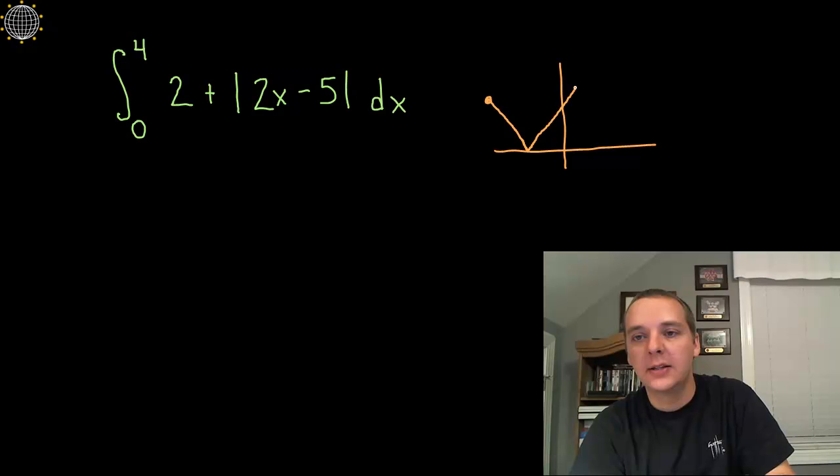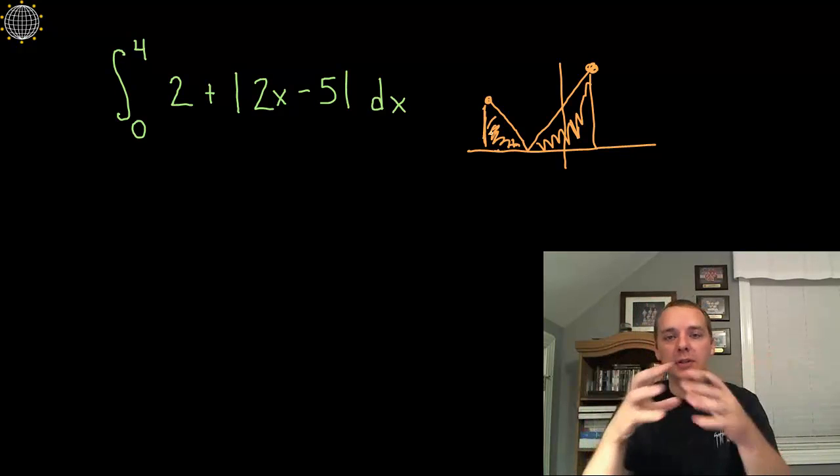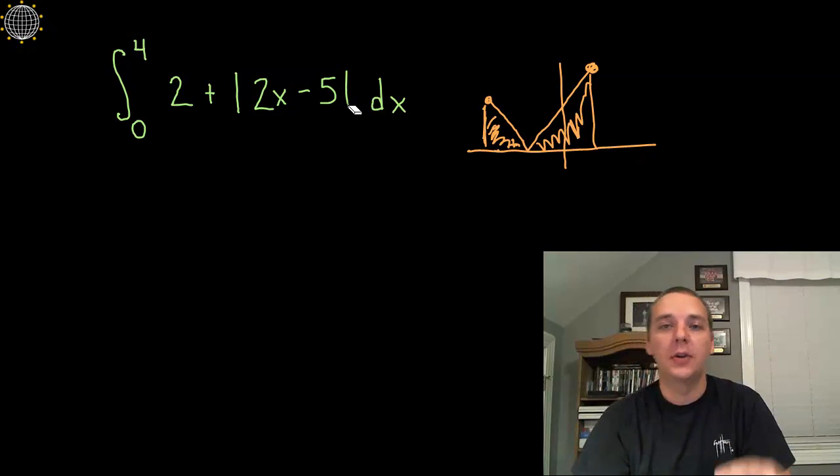So if your region looks something like this, just as an example, you would integrate from the first x value up to the vertex, and then from the vertex the rest of the way of the interval, and basically create these two regions that you add together.